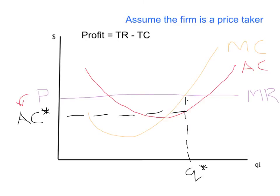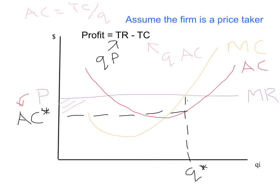How do we know that? Profit is by definition total revenue minus total cost. Total revenue is quantity times price. Total cost is quantity times average cost — because average cost equals total cost divided by quantity, so total cost equals quantity times average cost. So the profit made by the firm is the difference between price times quantity (the big rectangle) and average cost times quantity (the little rectangle). The profit of this firm is given by this shaded area here.